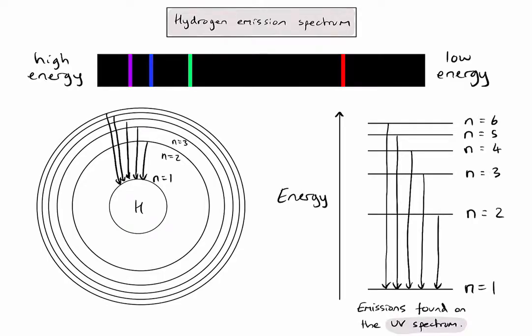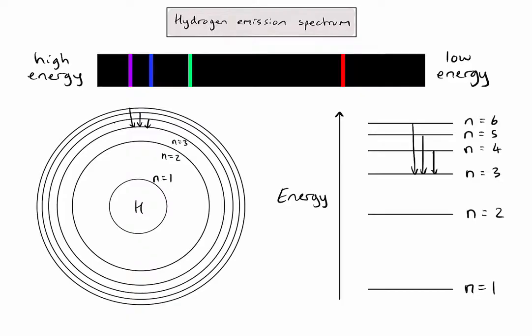Conversely, if electrons drop down to the third energy level, the amount of energy released is very low, so we would expect to see it on the infrared part of the spectrum, which again we can't see with our eyes. And just like with the hydrogen emission spectrum in the visible part, we would expect these lines to converge as well, indicating that energy levels in an atom converge as we move out.